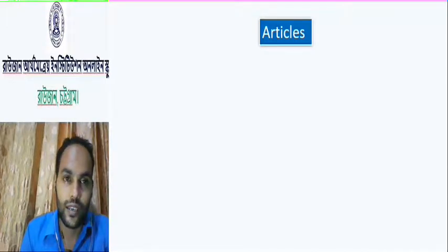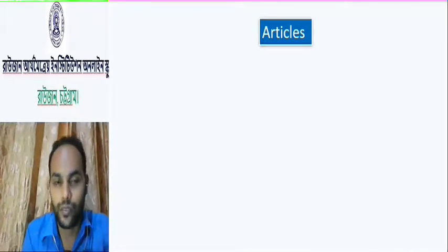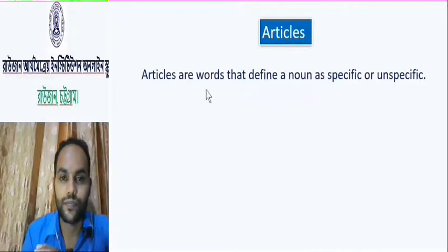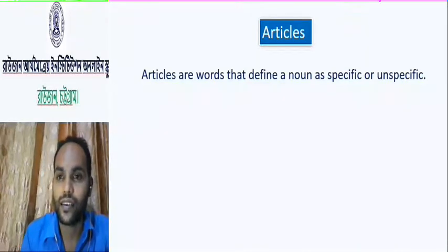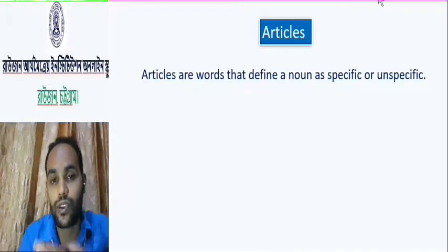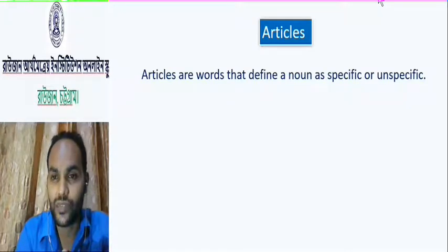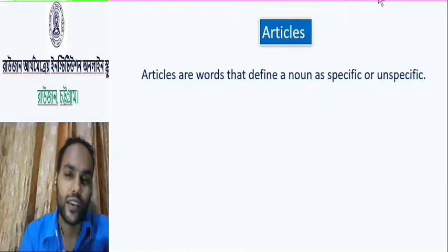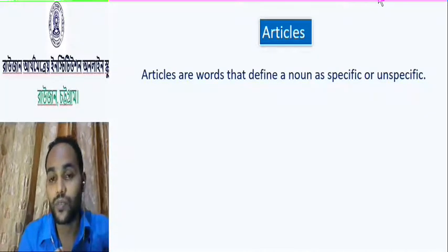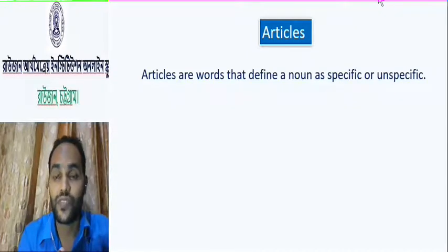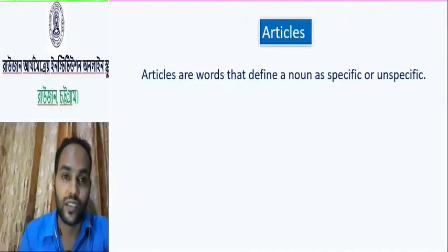Today, our main topic is articles. Firstly, what is an article? Articles are the words that define a noun as specific or unspecific. We have to put articles before nouns — as a specific or unspecific element.